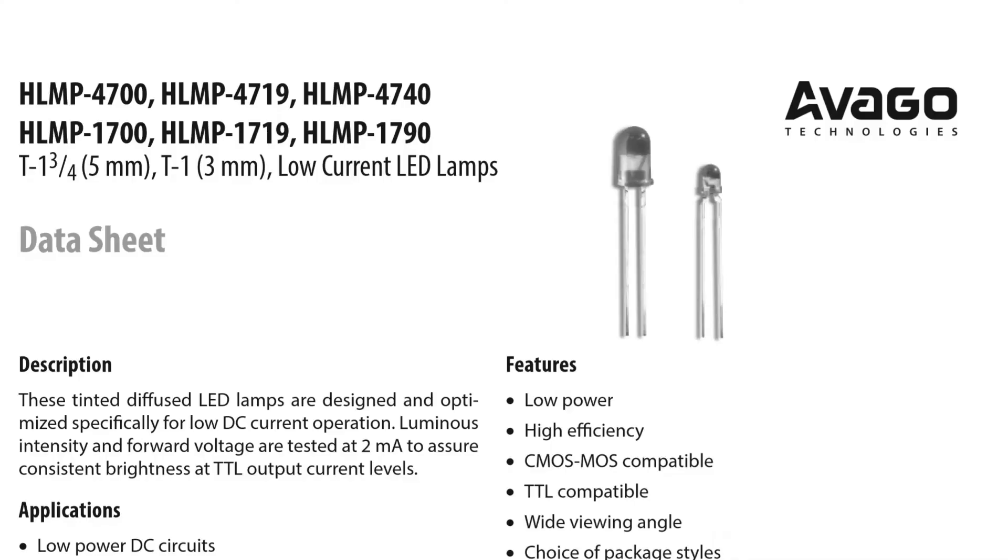Let's look at the data sheet for the LED. Again, when looking at a data sheet, we have to have a goal or purpose. And so we have two purposes. We want to know which pin is which, and we want to find the voltage and current.